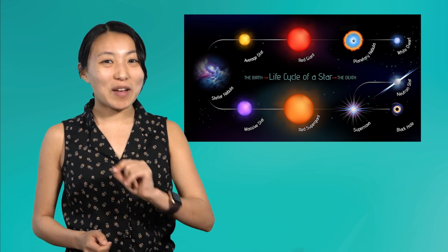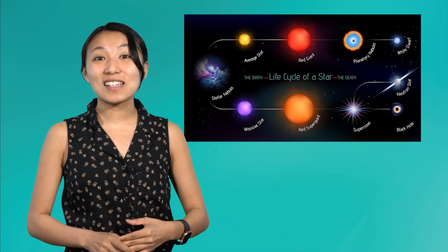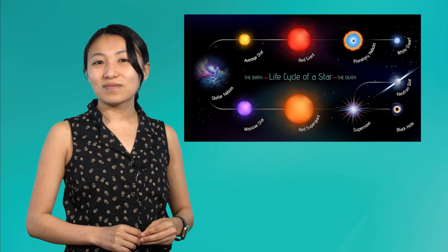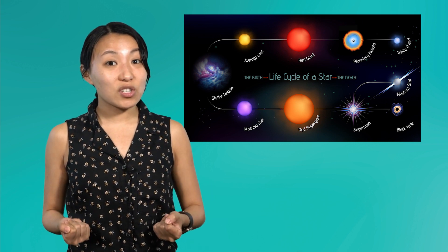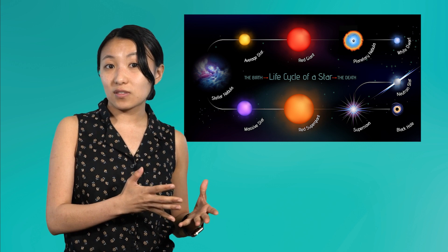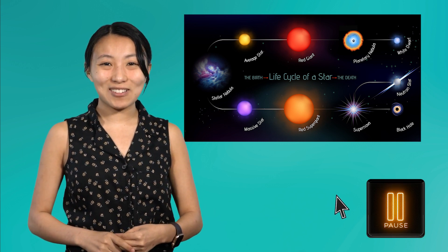Now that you've learned about nuclear fusion and how it is the energy source for stars it's time to think like an astronomer. Why do you think the life cycle of stars is different for average-sized stars and massive stars? Pause the video and record your answer in the guided notes.